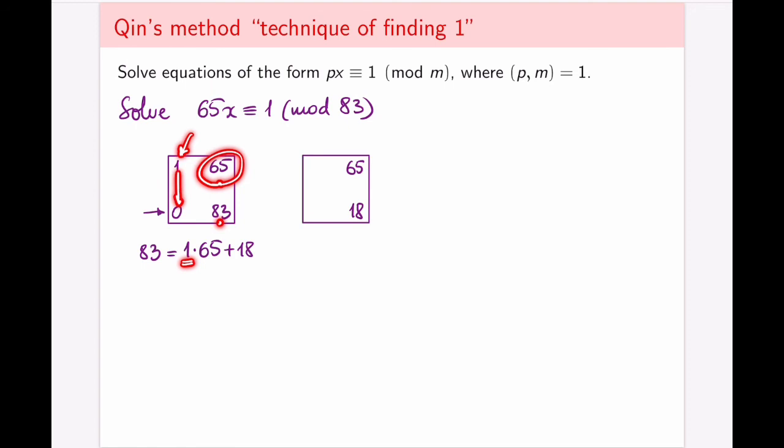So we're going to multiply the quotient of the division by the smaller corresponding number, and add the result to the larger corresponding number. So I take my quotient, which is one. I multiply it by the smaller co-number, because 65 is less than 83. One times one is one, and I'm going to add that to the bigger number. So this becomes one, and this stays as one. And then I repeat the exact same process again.